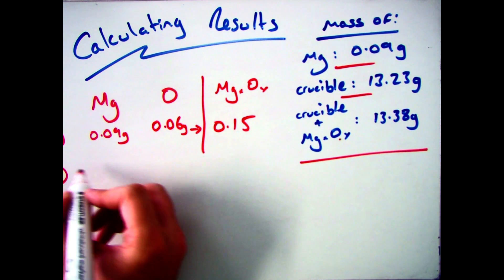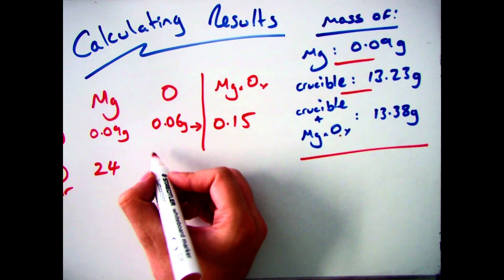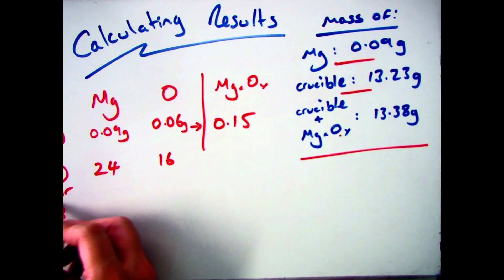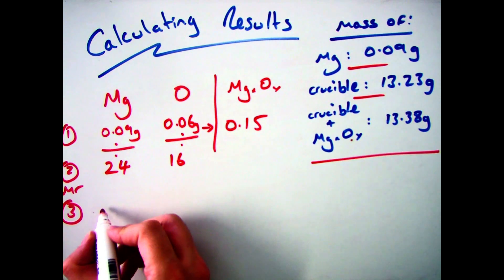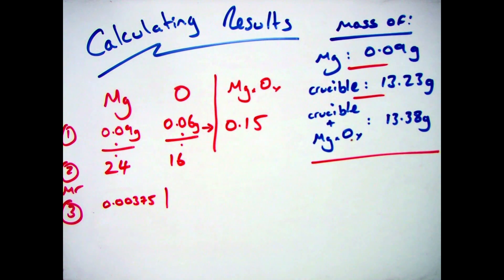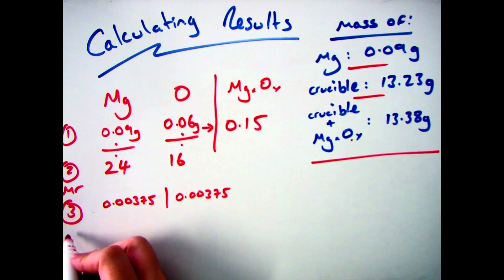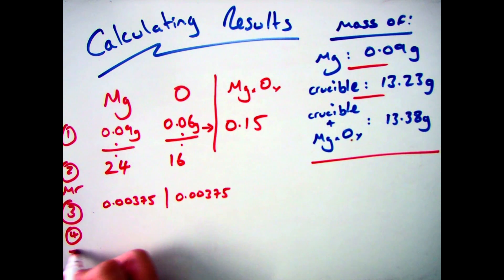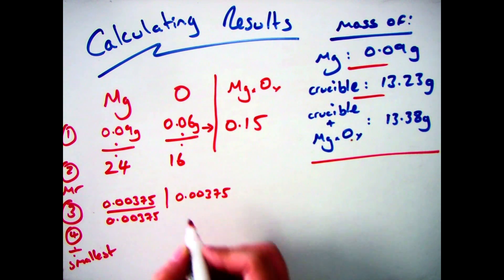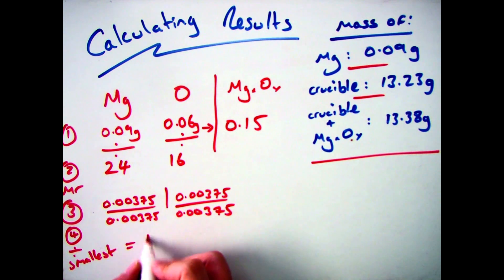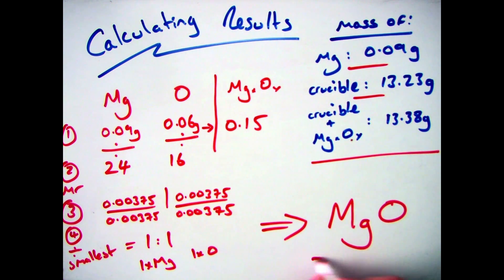The next step is to do the empirical formula calculation. You write down the masses, then write down the atomic masses — which you'll be given in an exam — and divide them. So 0.09 divided by 24 is 0.00375, and 0.06 divided by 16 is also 0.00375. You then divide both by the smallest number — 0.00375 — which gives a ratio of 1:1. So I have one magnesium and one oxygen, meaning my formula is MgO.